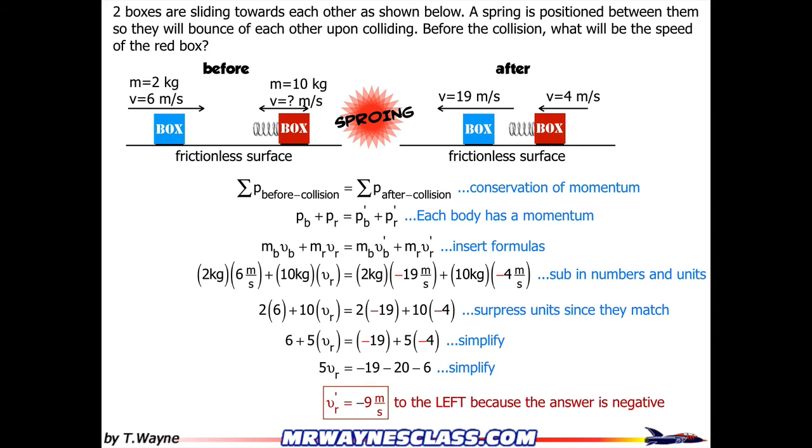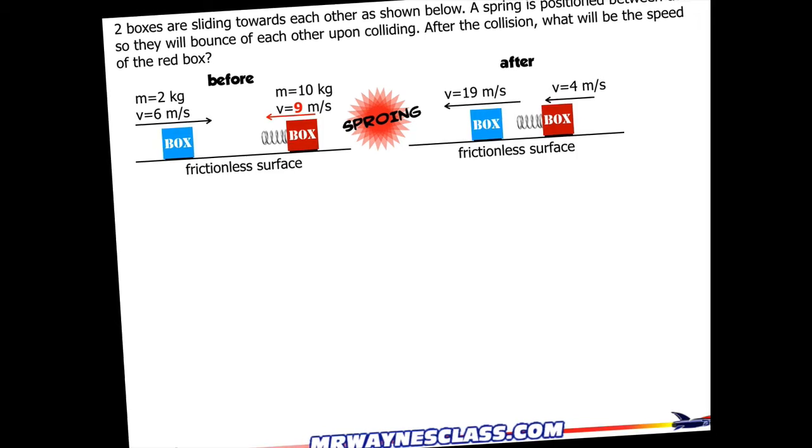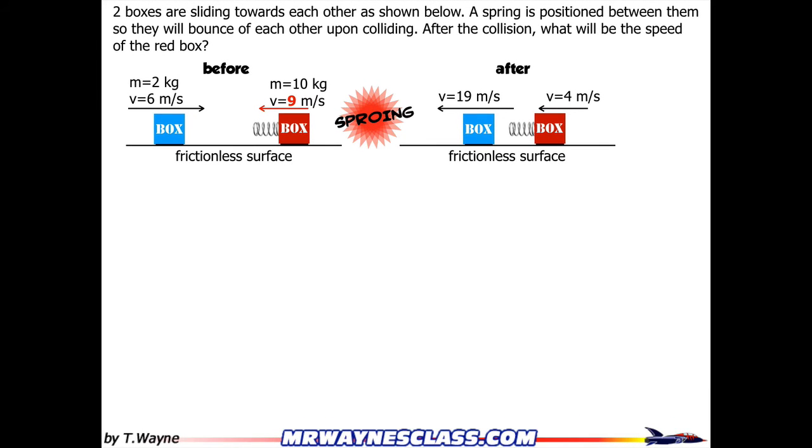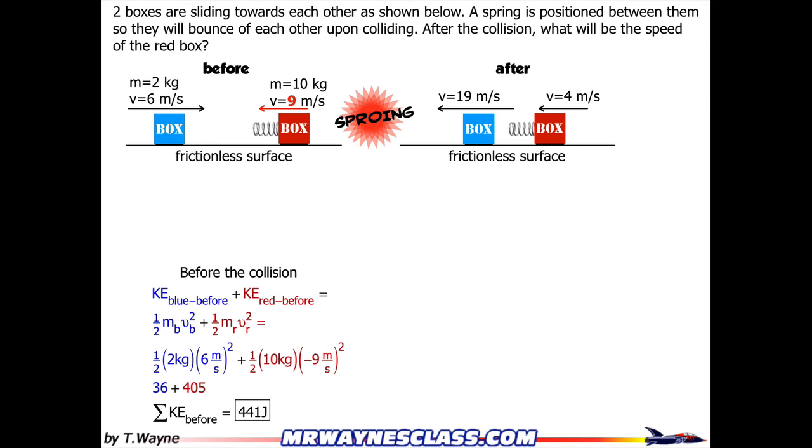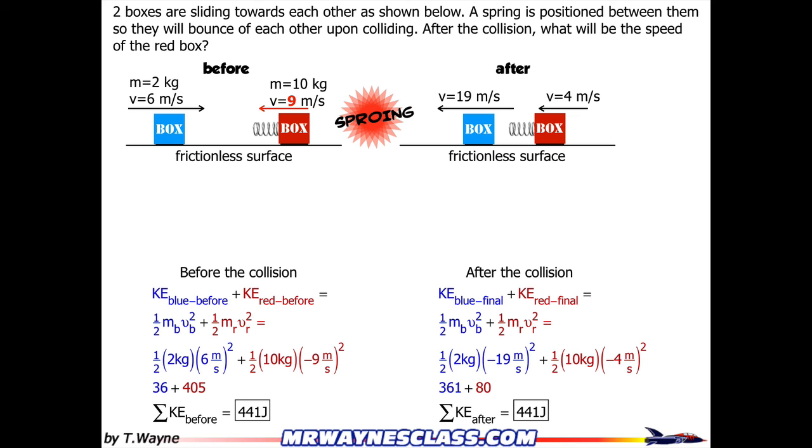So now let's talk about the perfectly elastic part. So here's the problem with the answer, the 9 meters per second, and I know it's perfectly elastic if I look at the energies. So I'm going to sum up all the kinetic energy before the collision, as shown here, and I get 441 joules. And then I'll sum up all the kinetic energy of the two bodies after the collision, and I get 441 joules.